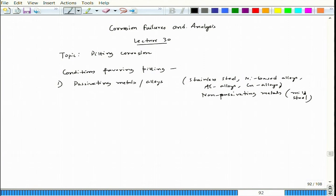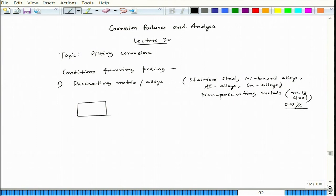I have some pictures of pitting in non-passivating metals — specifically 0.17% carbon steel — and I will show how pitting happens there. The logic is that we have a surface that is passivated, and because of some reason — such as inhomogeneous presence of passivating metal like chromium in stainless steel, local strain effects, or the presence of some soluble precipitates — the passive layer can break.